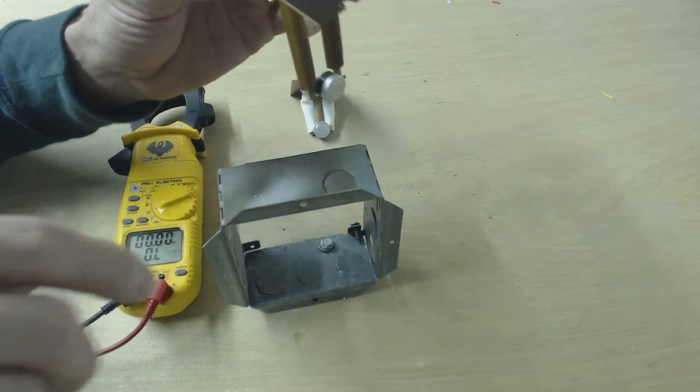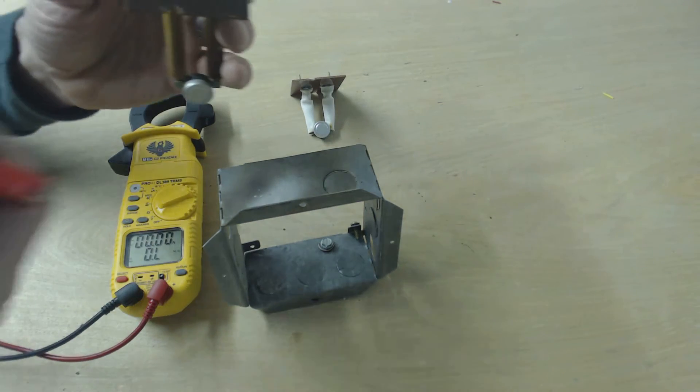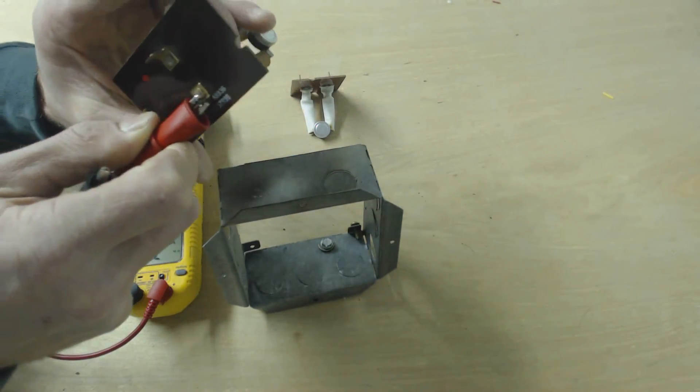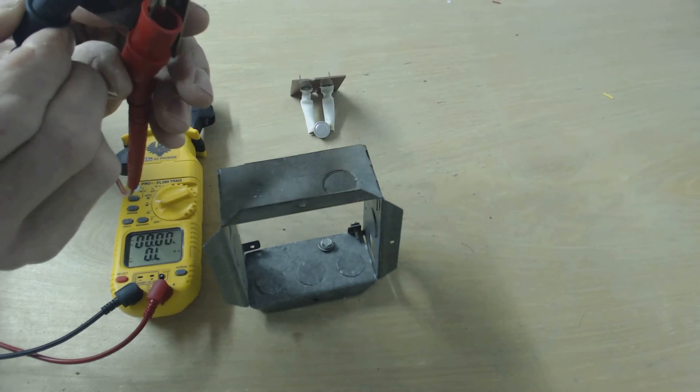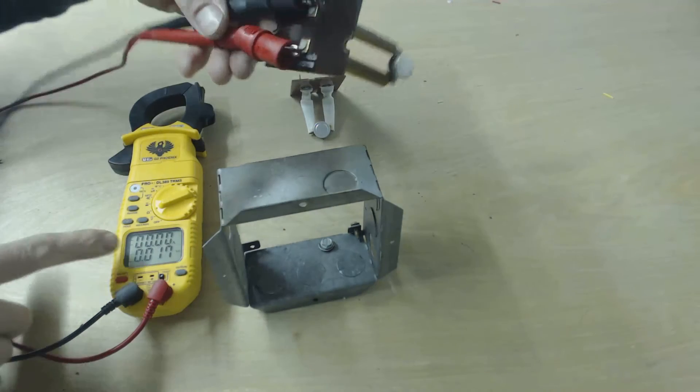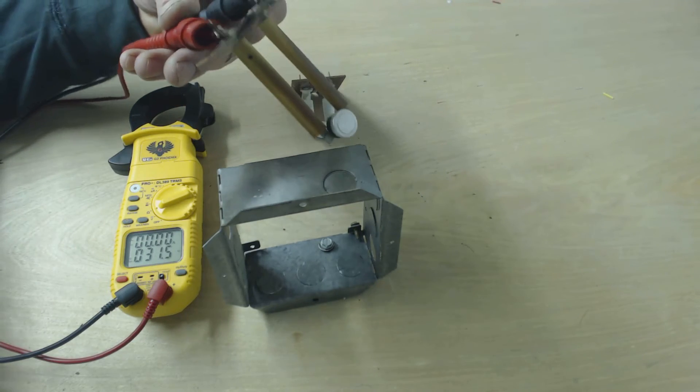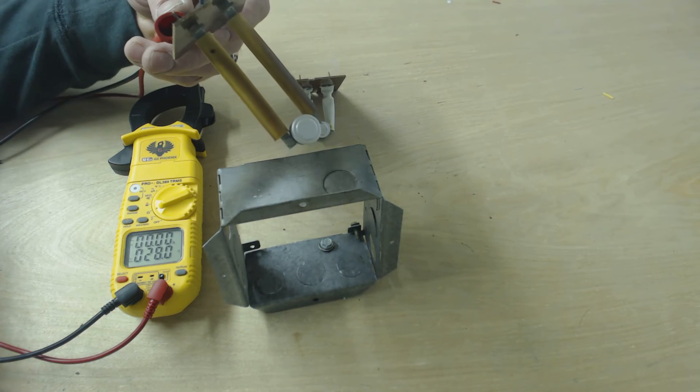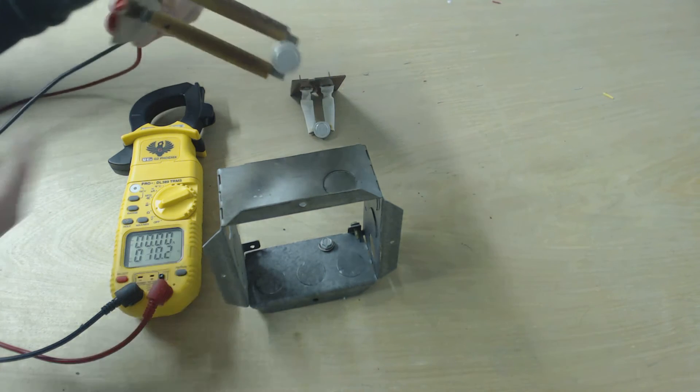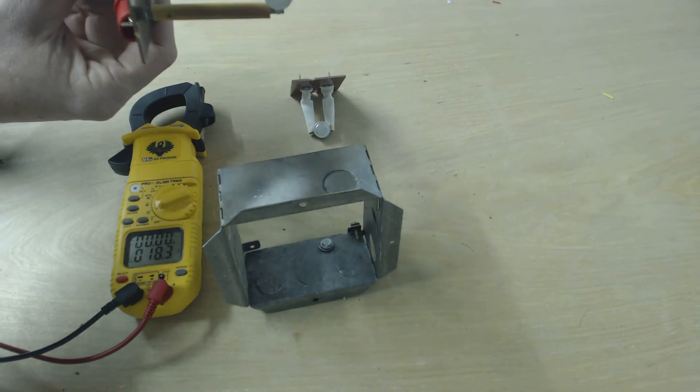So we can actually test this one out with our multimeter probes. So now we have zero ohms of resistance. We actually have some ohms of resistance. Remember this part is bad. So let's just see how much heat it's going to take to go ahead and open this up.